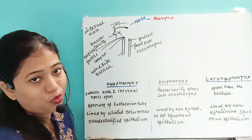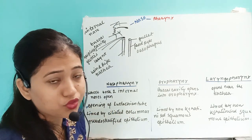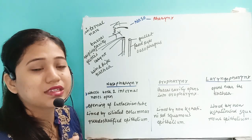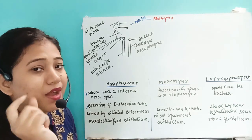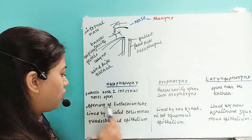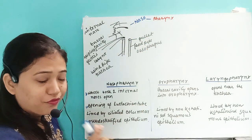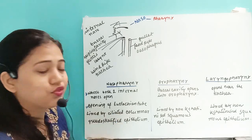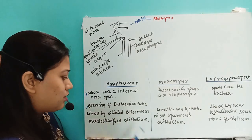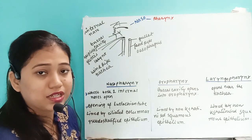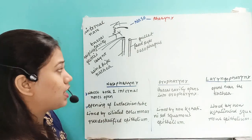The nasopharynx is also where the opening of the eustachian tube occurs. The eustachian tube connects the middle ear with the pharynx. The openings of both eustachian tubes occur in the nasopharynx region. This region is lined by ciliated columnar pseudostratified epithelium.